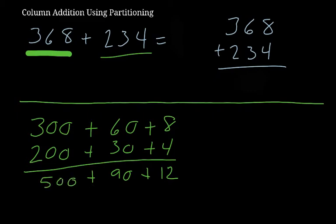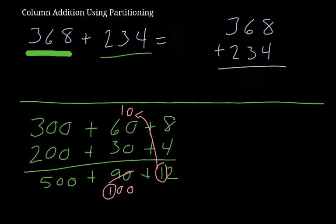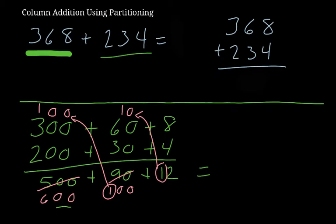At this point you have to realize that you've got a set of 10 here. This set of 10 has to be added to the tens column, making that 100. You should see that this is now 100, not 90. That set of 100 then needs to be added to the hundreds column, which makes it not 500 but 600.